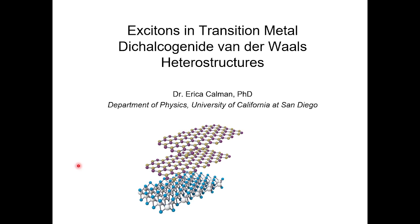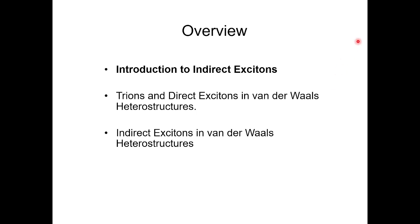The structure you see at the bottom of the slide is what we're going to be talking about, because the title is Excitons in Transition Metal Dichalcogenide Van der Waals Heterostructures, and that structure you see is a Van der Waals heterostructure. We're going to give an introduction to what indirect excitons are, then talk about an experiment where we looked at trions and direct excitons in Van der Waals heterostructures, and then discuss studying indirect excitons in Van der Waals heterostructures.